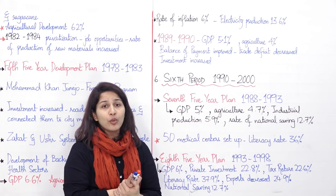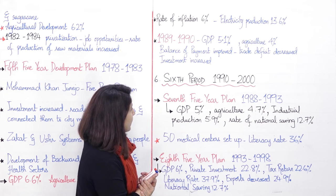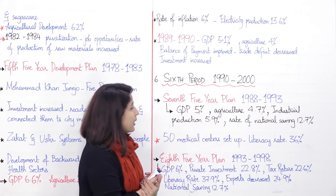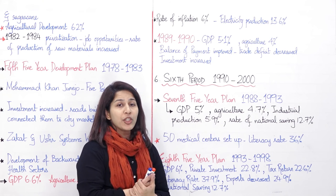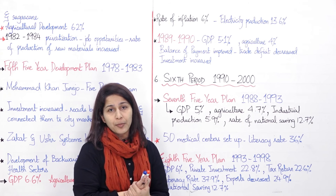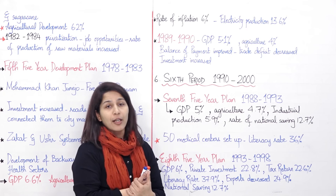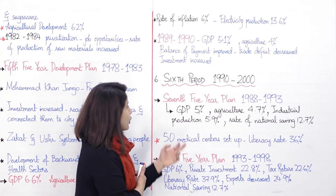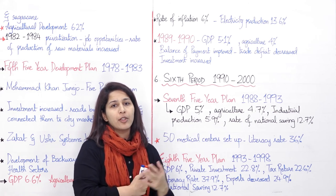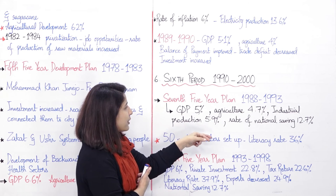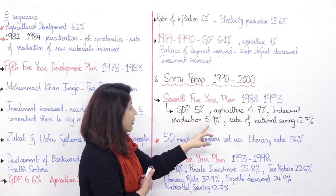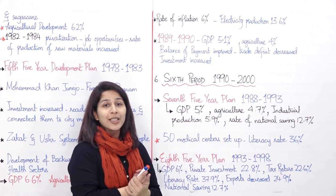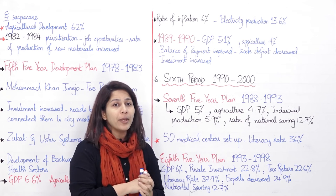Then came the sixth period, from 1990 to 2000. In this, the Seventh Five-Year Plan was implemented, which ran from 1988 to 1993. There were positive impacts, but politically there were changes — Benazir Bhutto was Prime Minister, then she was removed in 1993, followed by Nawaz Sharif's government, and then in 1999 General Pervez Musharraf imposed martial law. Under the Seventh Five-Year Plan: GDP increased by 5 percent, agriculture by 4.7 percent, industrial production by 5.9 percent, and the national savings rate increased to 12.7 percent.